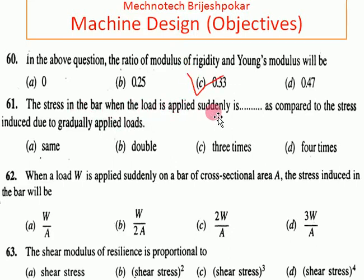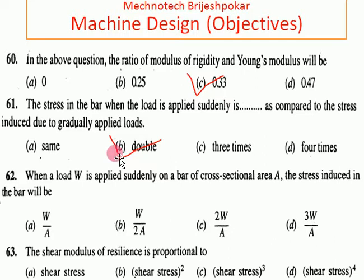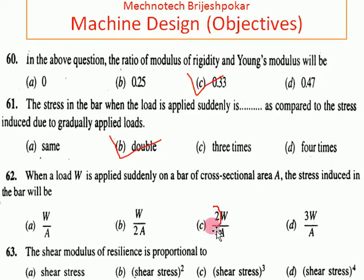The stress in a bar when the load is applied suddenly is double compared to the stress induced due to a gradually applied load. If you apply the load gradually it is the same, but for a sudden load, the stress is doubled. When load W is applied suddenly on a bar of cross-sectional area A, the stress induced is 2W/A, so the answer is C.